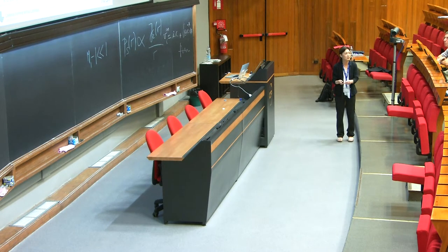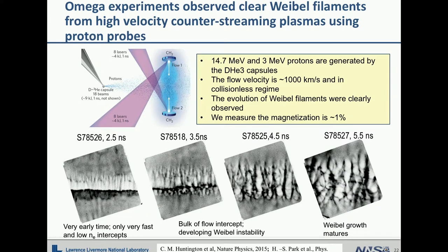The Weibel filamentation was theoretically predicted in the 1950s, and our set of experiments was the first to clearly demonstrate that Weibel filaments actually exist in the laboratory. We accumulated these filaments and measured the conversion from kinetic energy to magnetic energy at about the 1% level, which is quite significant. That is how we believe the universe is magnetized — in a supernova explosion where magnetic fields exist everywhere, the most fundamental mechanism converting kinetic energy to magnetic energy is the Weibel mechanism, and we demonstrated it in the laboratory.